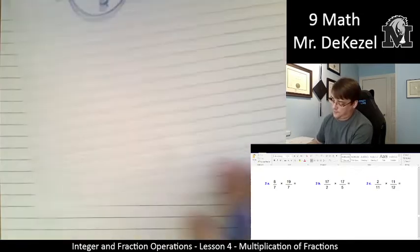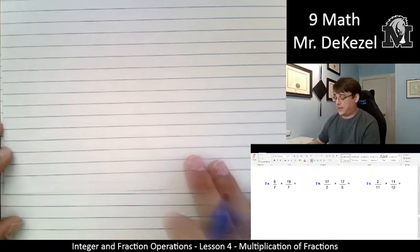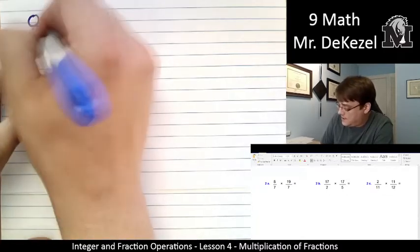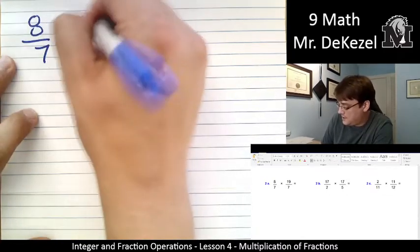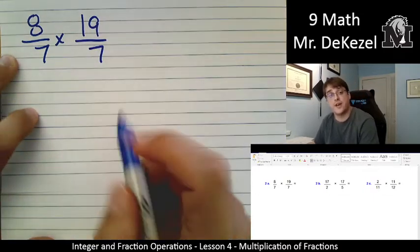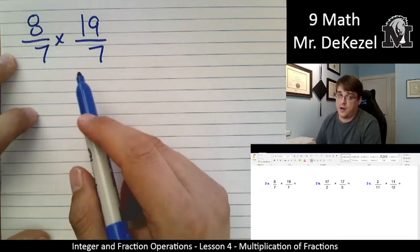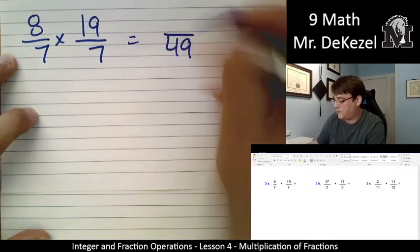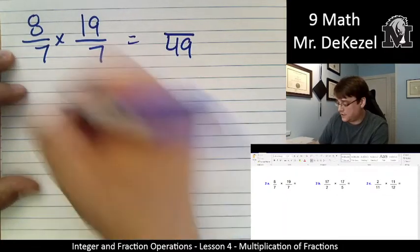Let's do a couple more. Yeah, we got time. Let's do a couple more. We have 8 over 7 times 19 over 7. We have practiced squaring 7 multiple times, so we know that that is 49. But what is 8 times 19? That is a little trickier.